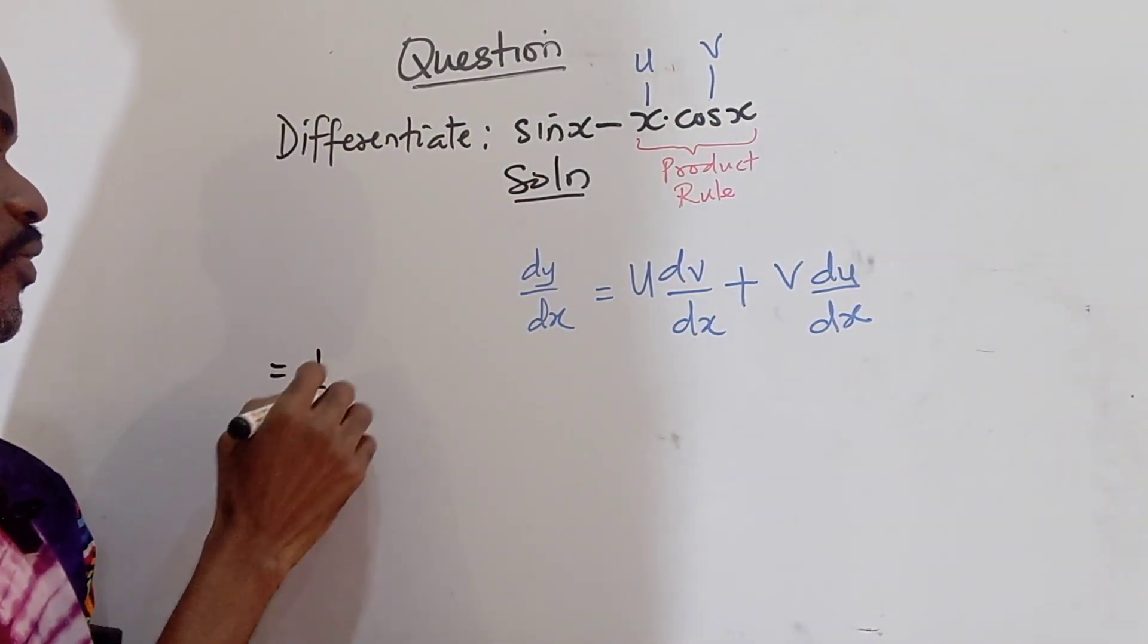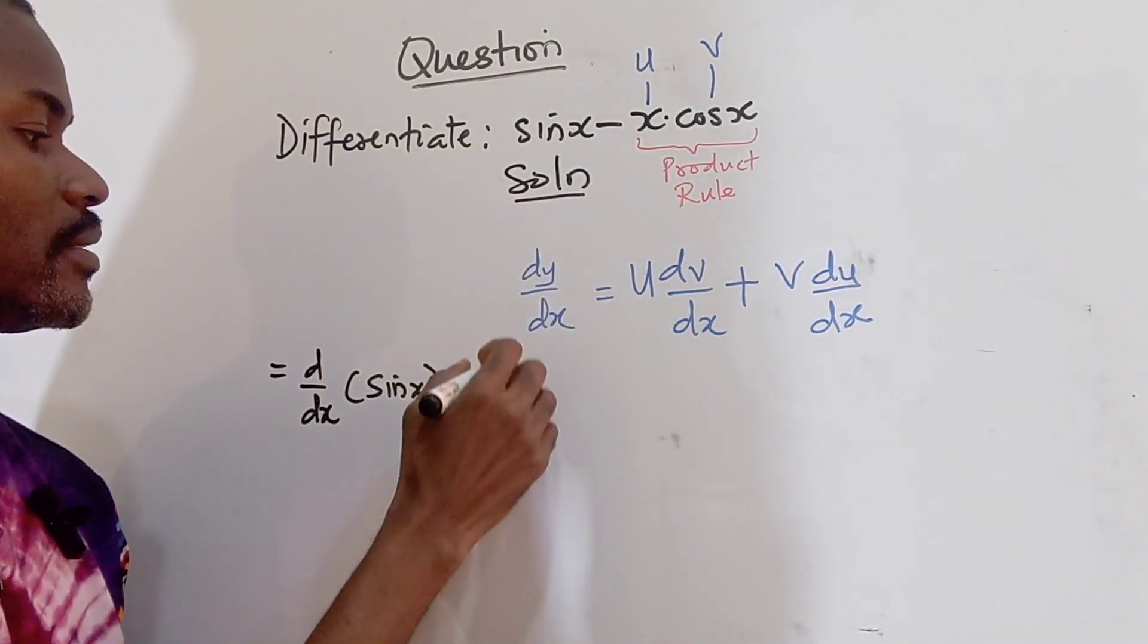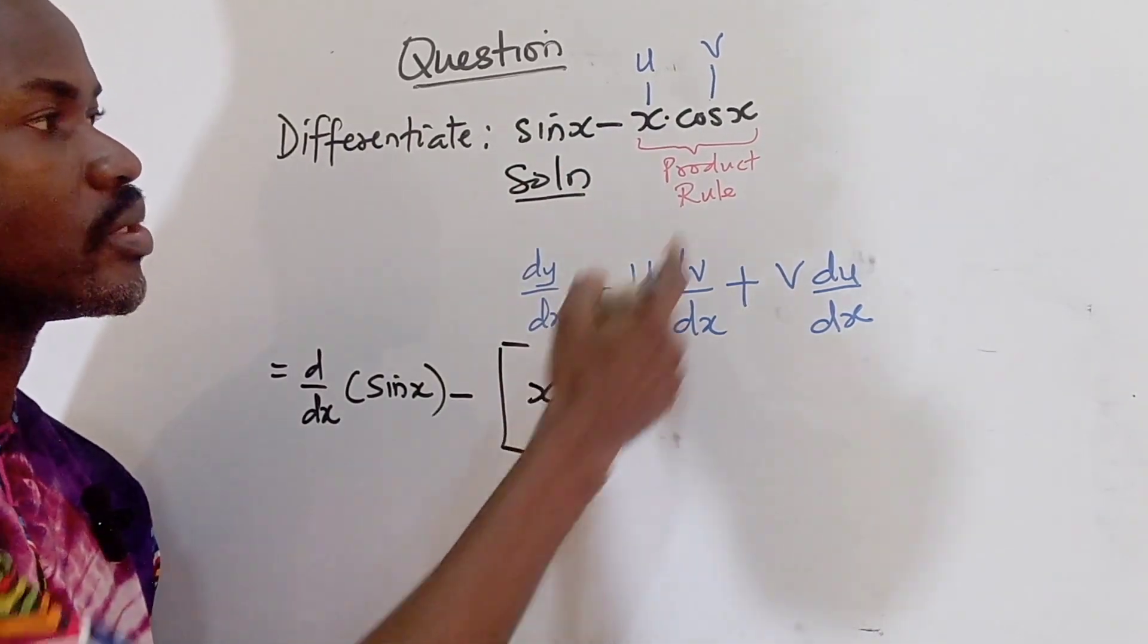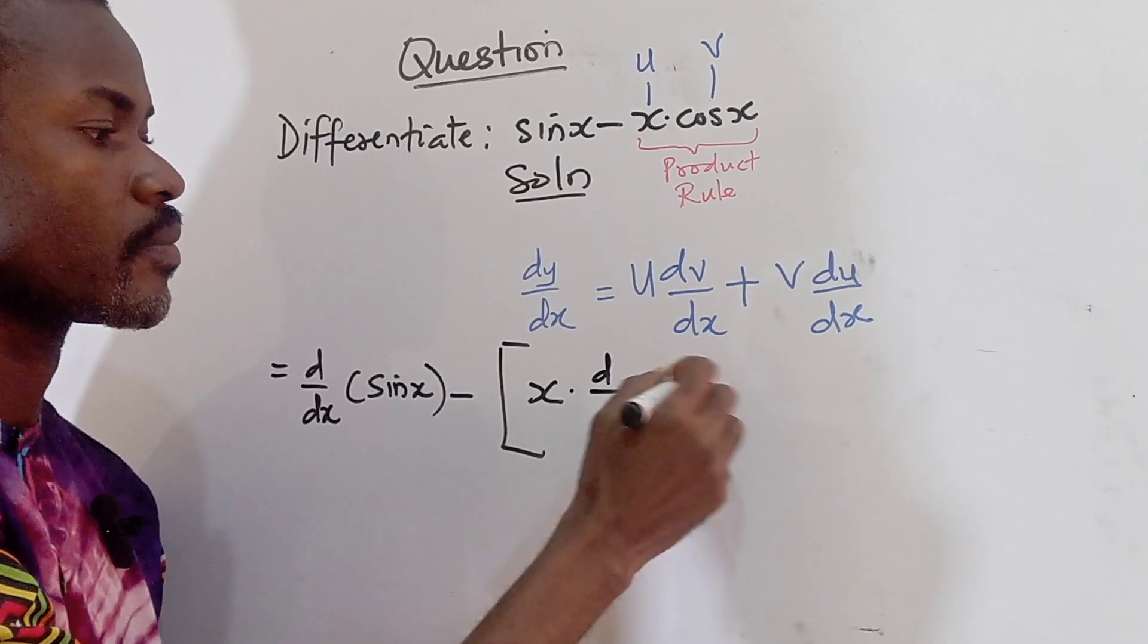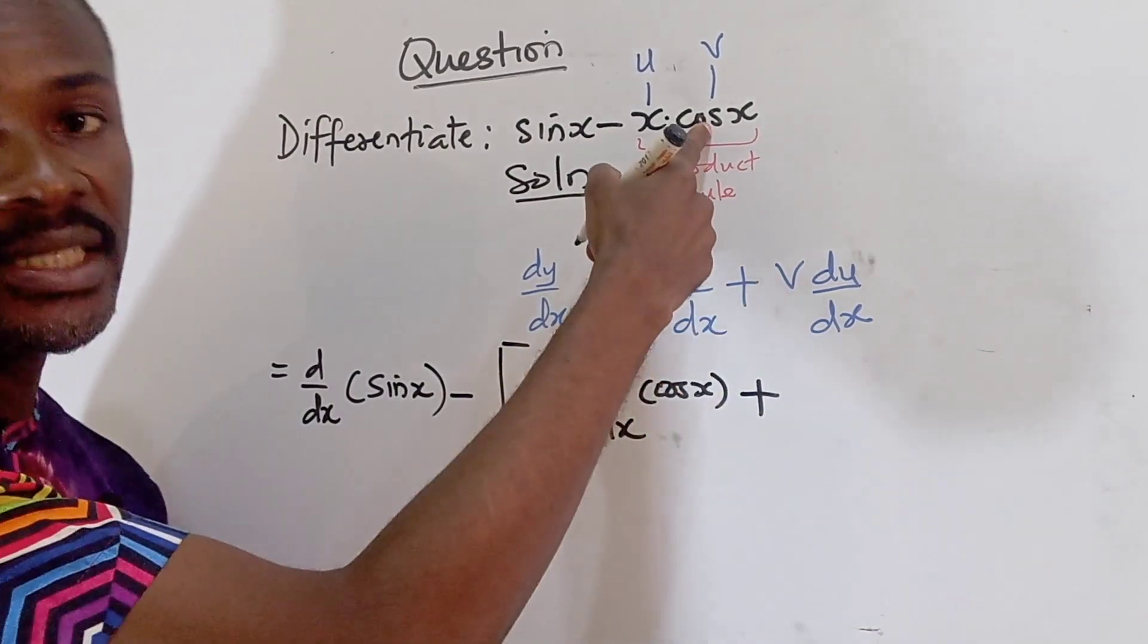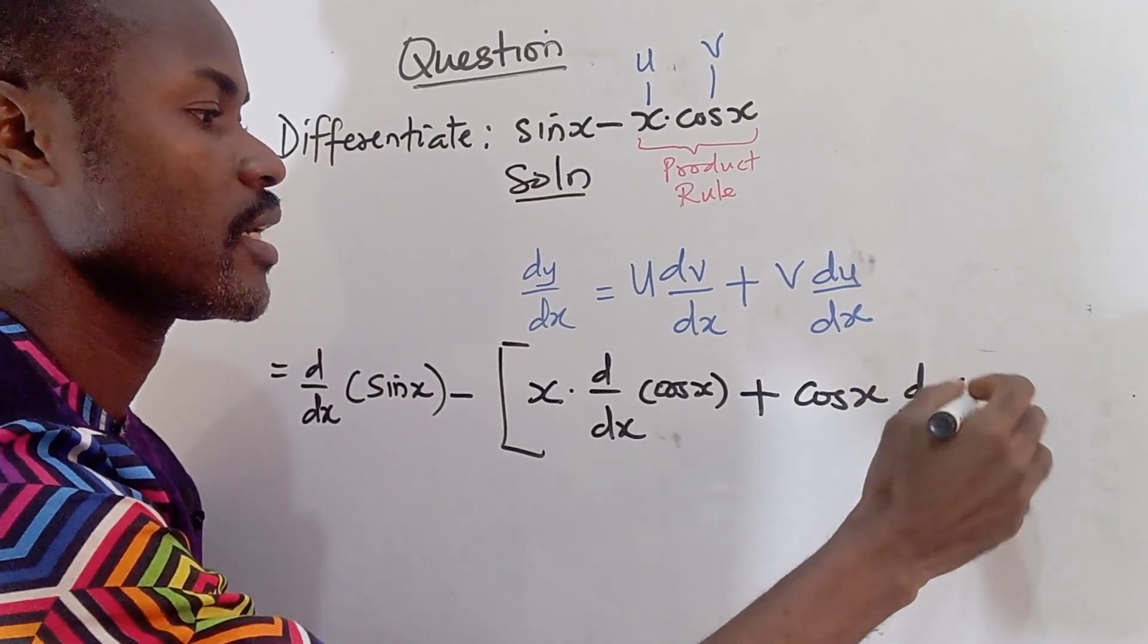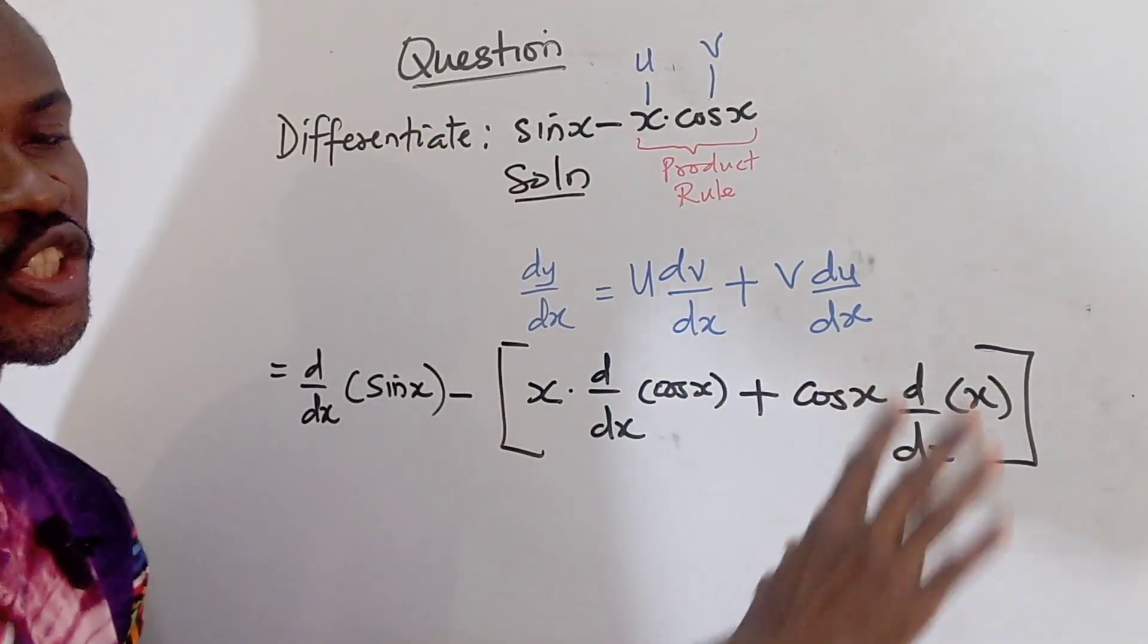So we are going to have this as differentiating our sine x minus, now we have to differentiate all this using the product rule. So I'm going to keep u first as x. So I have x, so differentiating our cos x and plus what? Now we are going to keep v. v is cos x. So I have cos x and we are going to differentiate x.